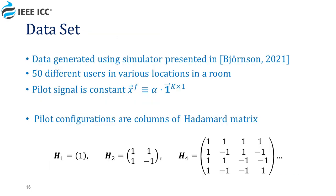The data we worked on was created in a novel simulator published by Professor Bjornsson last year. We tested ourselves on 50 different users scattered in varying locations in a room. When we use IRS with N elements, we used N pilot signals for N different configurations to evaluate the channels, direct and indirect, for each user.